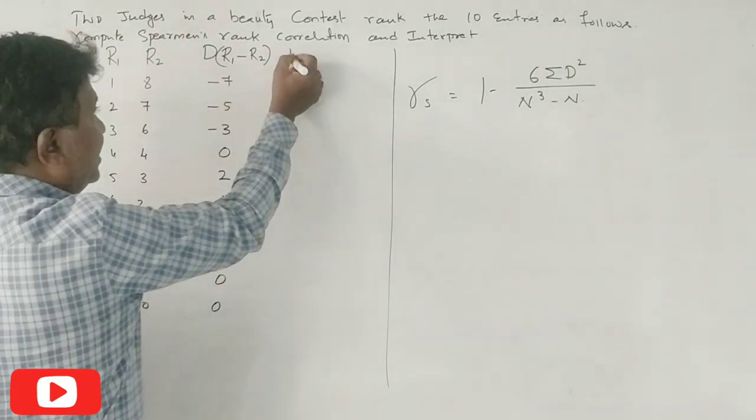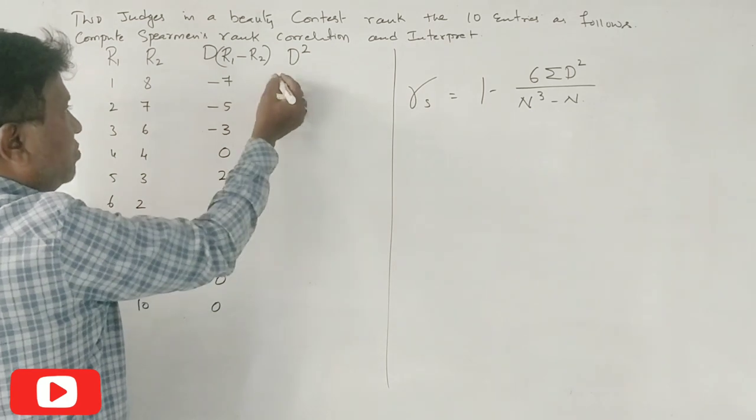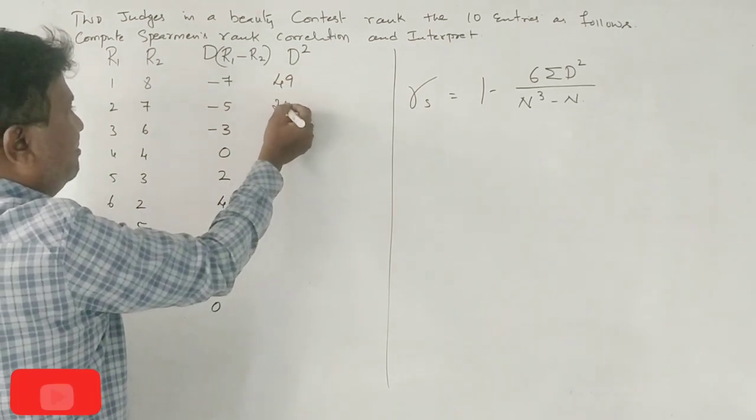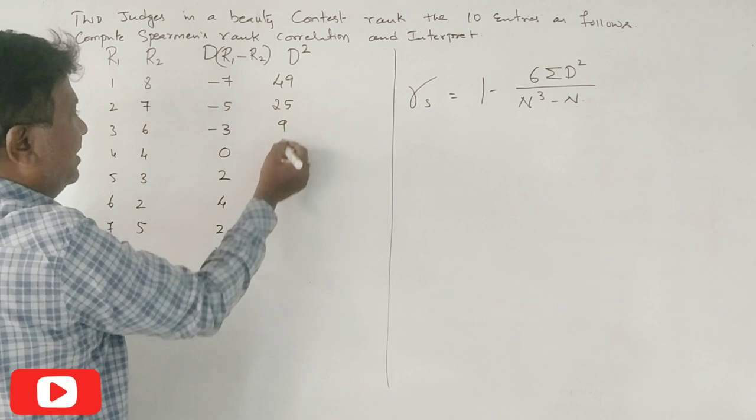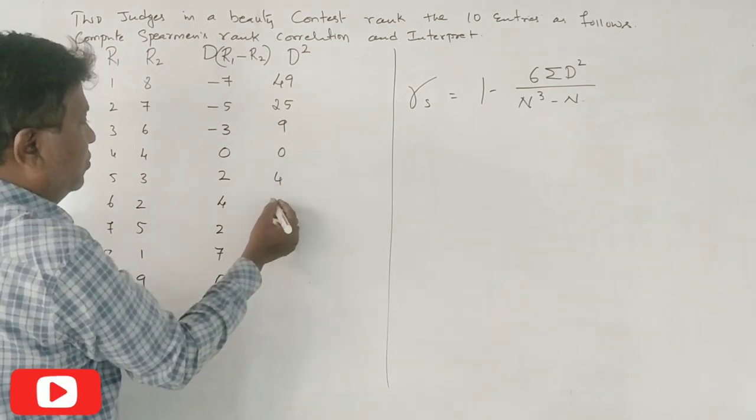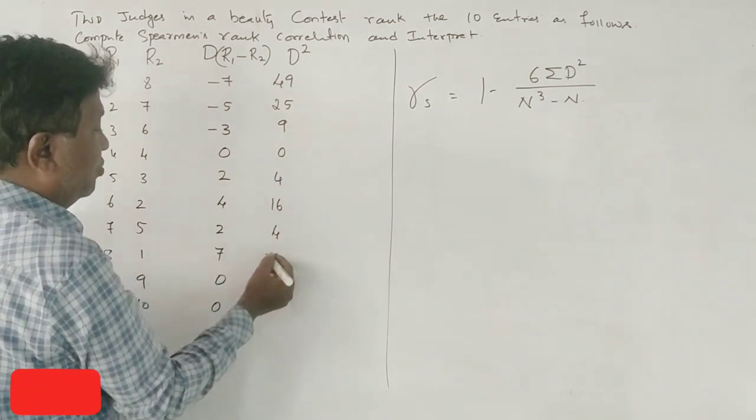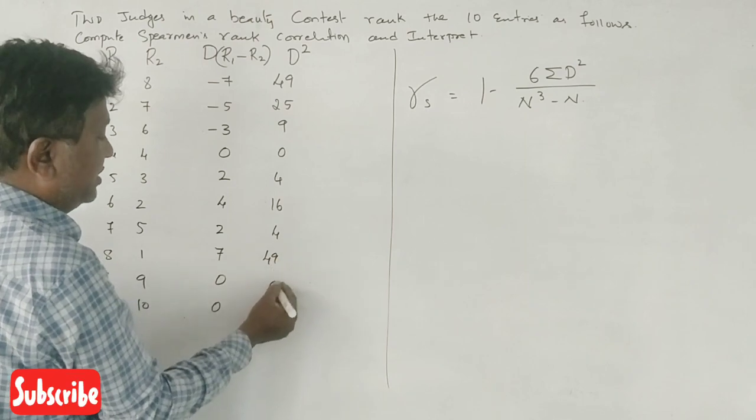Now we square these d values. 7 times 7 is 49, 5 times 5 is 25, 3 times 3 is 9, 0, 4, 16, 4, 49, 0 and 0.